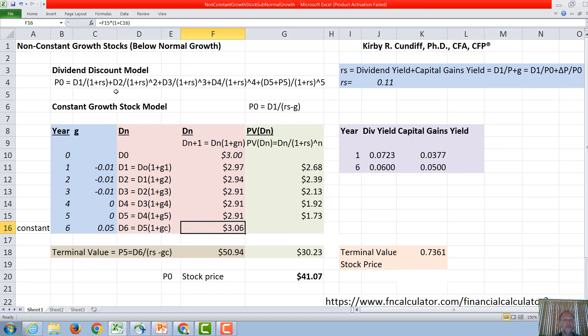Now we have D1, D2, D3, D4, D5, and for P5 we have D6. So our terminal value, after we get a constant growth rate stock, P5 will be this D6 over RS minus G-constant. RS is 11%, G-constant is 5%, so we have 0.11 minus 0.05 gives us 0.06, and we end up with $3.06 divided by 0.06, gives us a terminal value of $50.94.